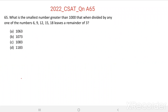Question number 65: What is the smallest number greater than 1000 that, when divided by any one of the numbers 6, 9, 12, 15, or 18, leaves a remainder of 3? Here we want to find the smallest number greater than 1000 which gives a remainder of 3 while dividing with any one of these numbers.